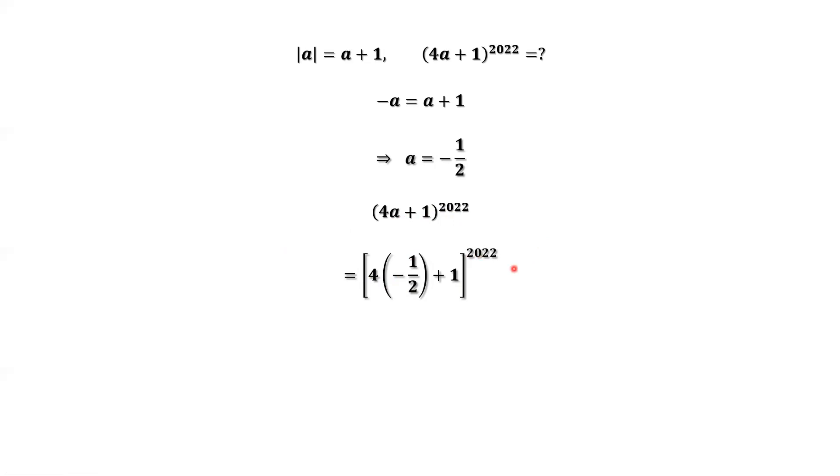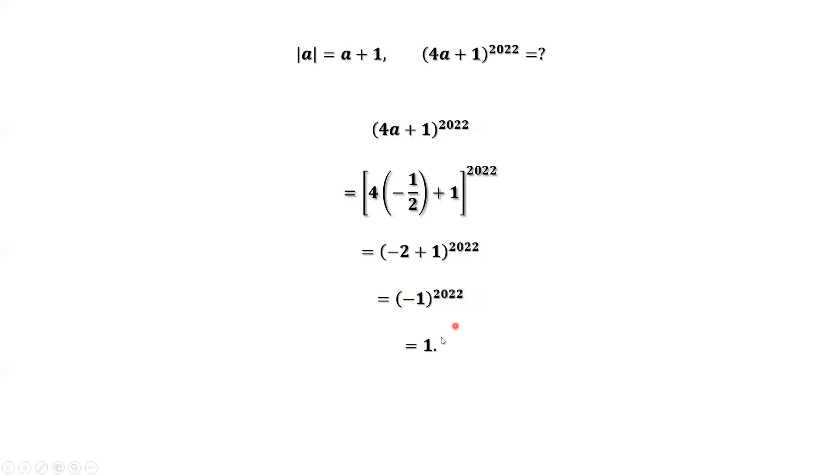We simplify the inside part. We have negative 2 plus 1 to the power 2022. Negative 2 plus 1 equals negative 1. Negative 1 to the power 2022 equals 1, because 2022 is an even number.